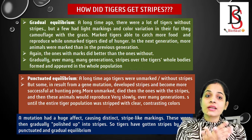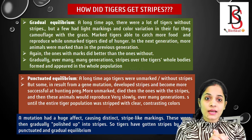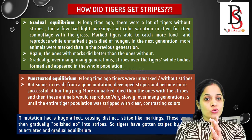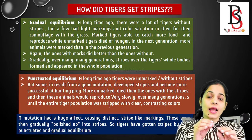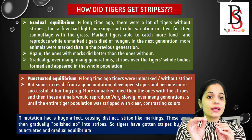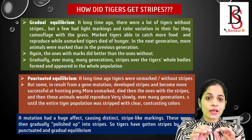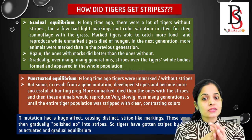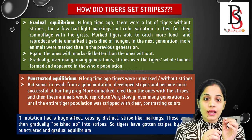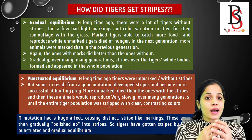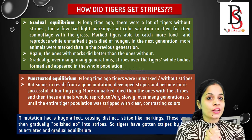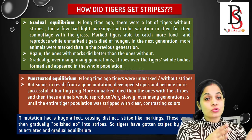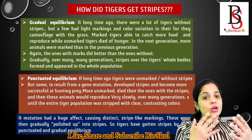Now I have a question for you: how did tigers get their stripes — by gradual evolution, by punctuated evolution, or by a combination of both? Let's understand through a story. A long time ago, tiger-like animals were present without any stripes, but a few of them had markings. Those with stripes could hide in grasses and were successful in hunting prey, while those without markings died because of hunger.